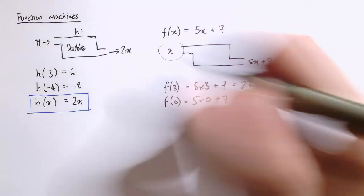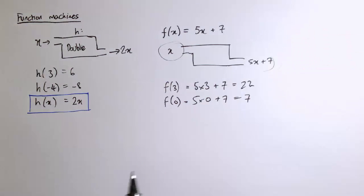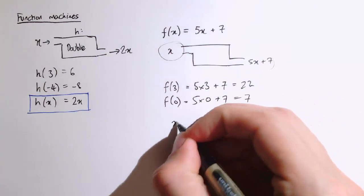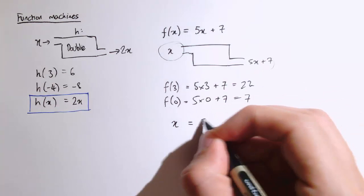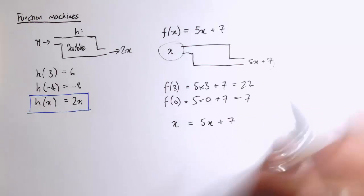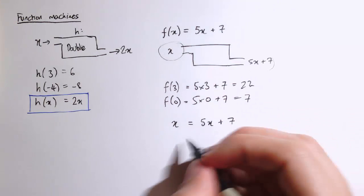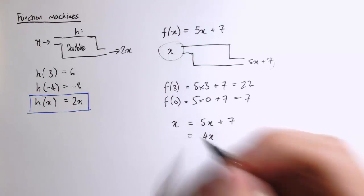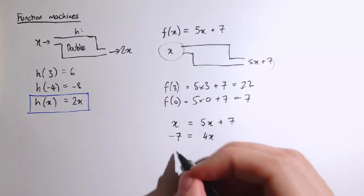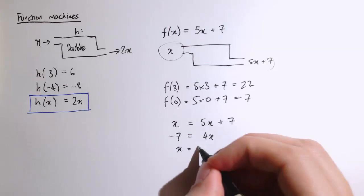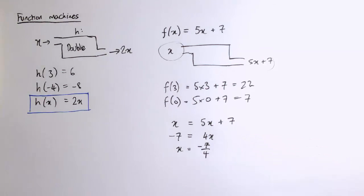Well, the input is x and the output is 5x plus 7. So that would be equivalent to solving x equals 5x plus 7. When is the input equal to the output? So solving this we get 4x equals minus 7, so x equals minus 7 over 4.